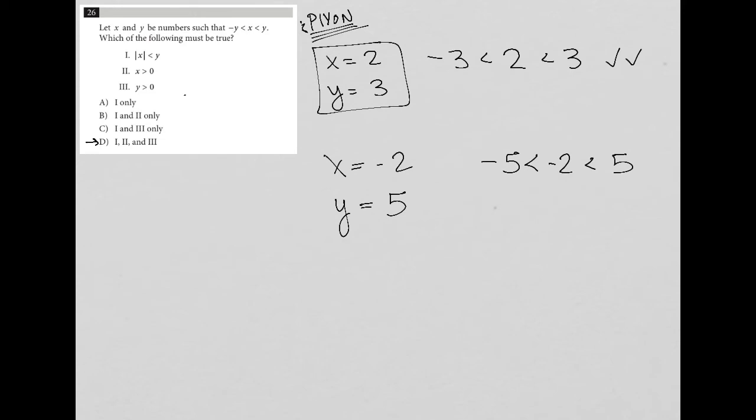So absolute value of X, in this case, that becomes positive two is less than five. Yes. So I like one. And for number two, I get negative two is greater than zero. That's not true. That is not true anymore. So because it says must be true, not could be true, but must be true, that's even more so the reason why I tried both of these options here. And we see on the second round that option two actually does not work.